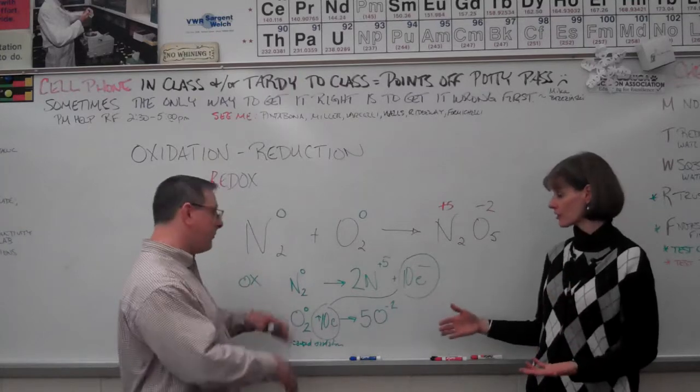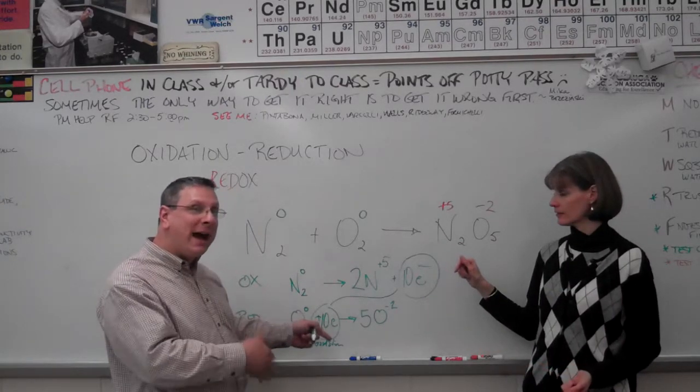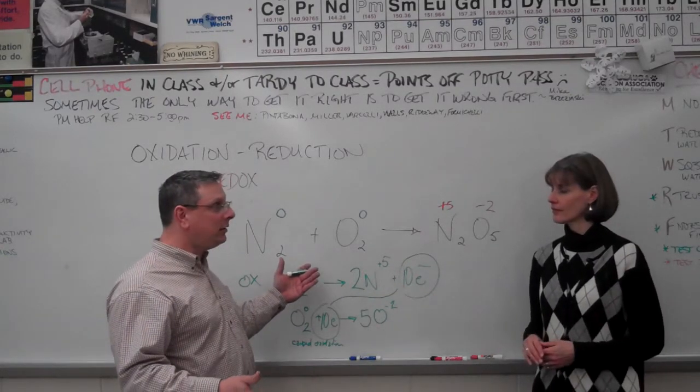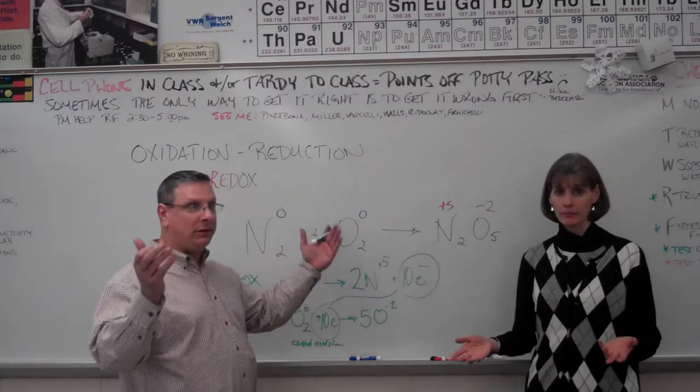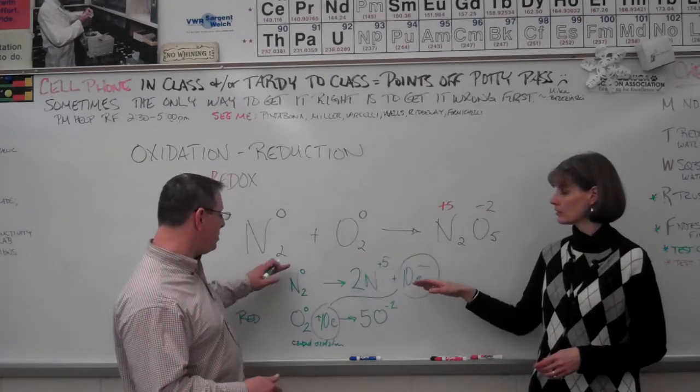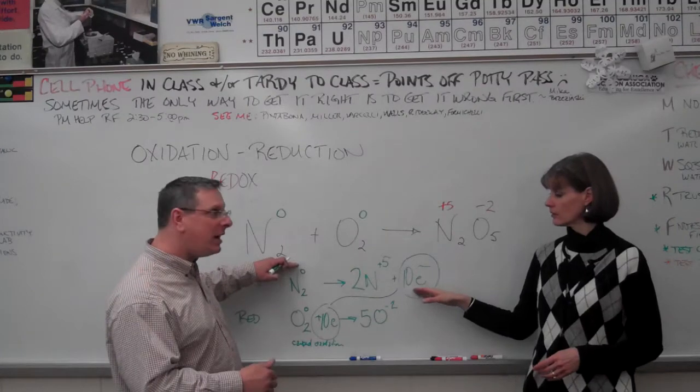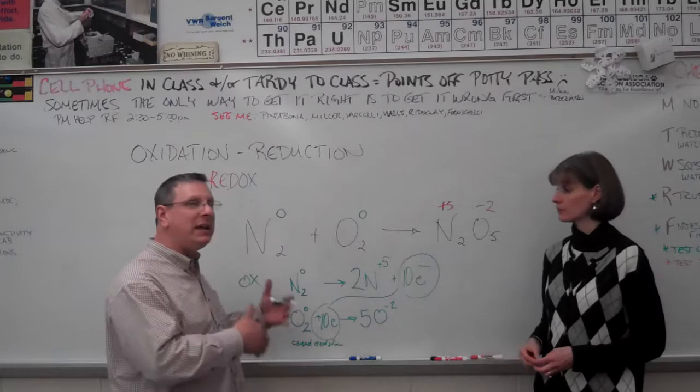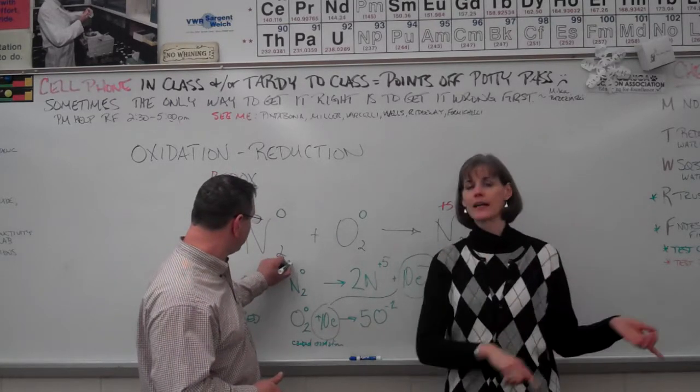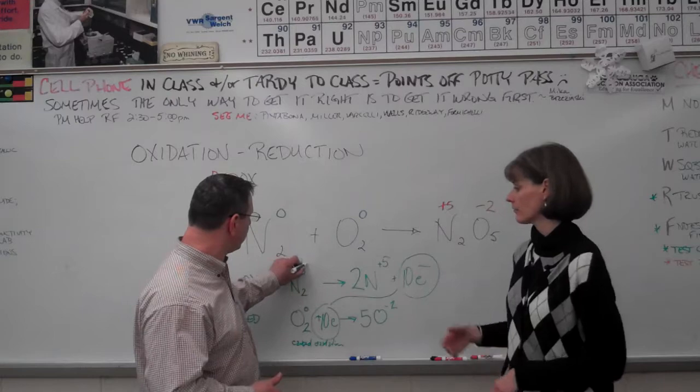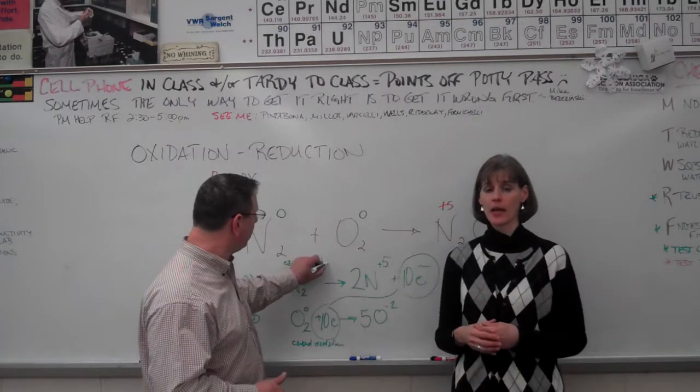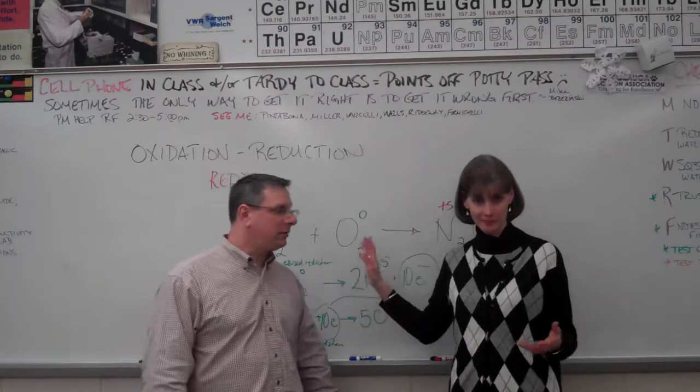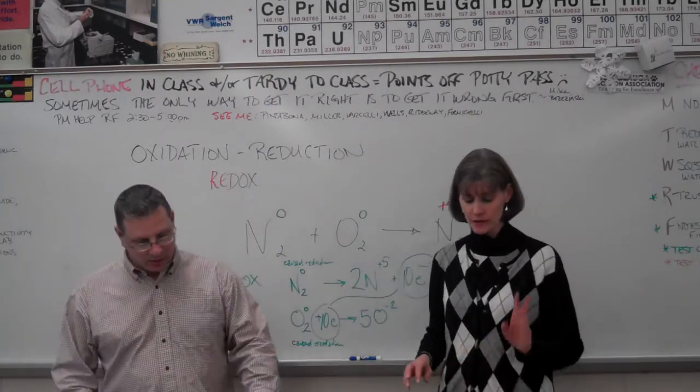And vice versa. Oxygen could not have gained these electrons were it not for nitrogen wanting to give them away. So the nitrogen actually made it possible. The nitrogen caused this reduction. It is the reducing agent. So that's just swinging way back to the beginning. Very simply, the agents are opposite of the process that's happening. But we did want to touch base on that again. So we've really covered like five or six test items right there. Which takes us to the last couple.